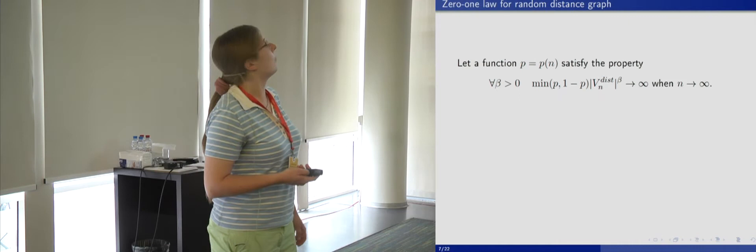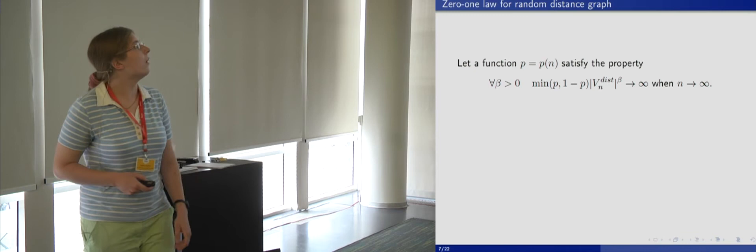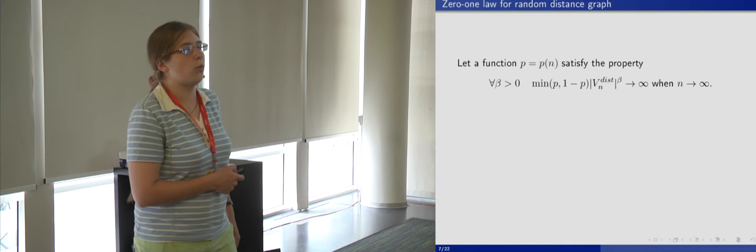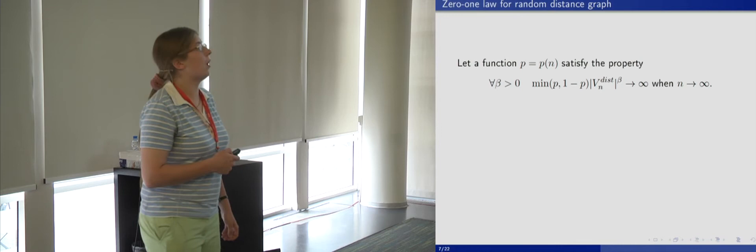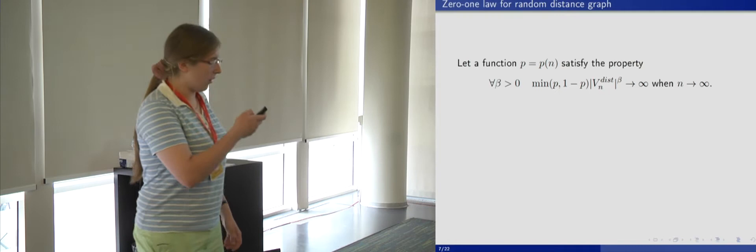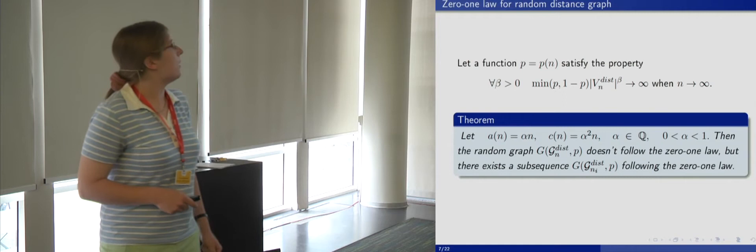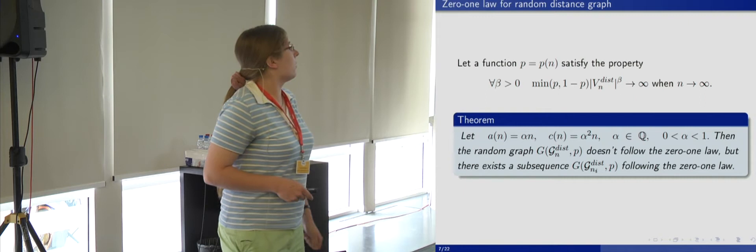So this graph is a distance graph because edges connect vertices at some fixed distance. Let's formulate a result on the 0,1 law for such a model of random distance graph. We suppose that the function P(N) satisfies the following property, which is similar to the property used in the theorem by Glebsky, but here we replace N by the number of edges and the number of vertices in our distance graph. Then the following theorem is true. Suppose that A equals alpha·N, C equals alpha²·N, and alpha is a rational number from the interval (0,1). Then the random graph G(G_N, P) does not follow the 0,1 law, but there exists a subsequence G(G_{N_I}, P) following this law.